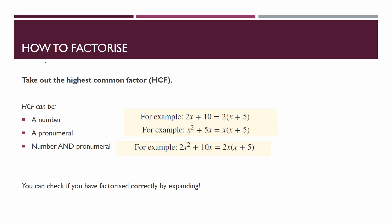So, how to factorize: the first step is to take out the highest common factor, the HCF. The HCF can be a number, a pronumeral — which is a letter — or it can be a number and a pronumeral combined. For example, if the question was 2x + 10, you need to think about what they both have in common. I can see that 2 can go into 2 and also into 10 without remainders.